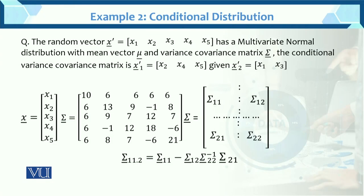Now this is the conditional distribution. The random variable x1, x2, x3, x4, x5—this is the 5-dimensional vector x—has a multivariate normal with mean vector μ and variance-covariance matrix Σ.